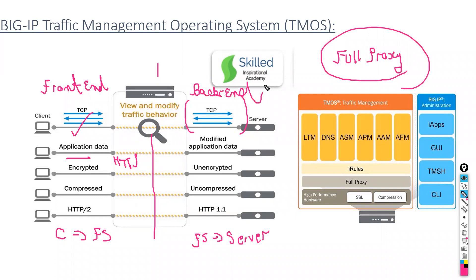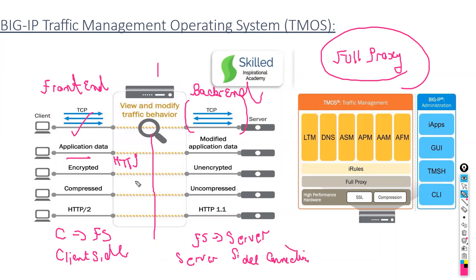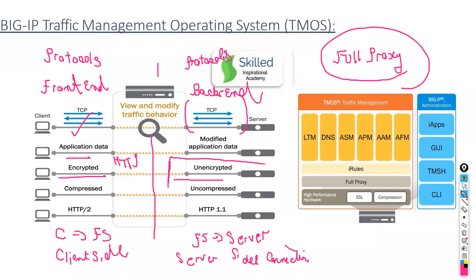That is how the architecture is built. Full proxy architecture is only available in F5. It maintains two-sided connections: one client-side connection and one server-side connection. The client-to-F5 connection can be encrypted while the F5-to-server connection is unencrypted, so you can run separate protocols on each side. They are fully independent — that is called full proxy architecture.